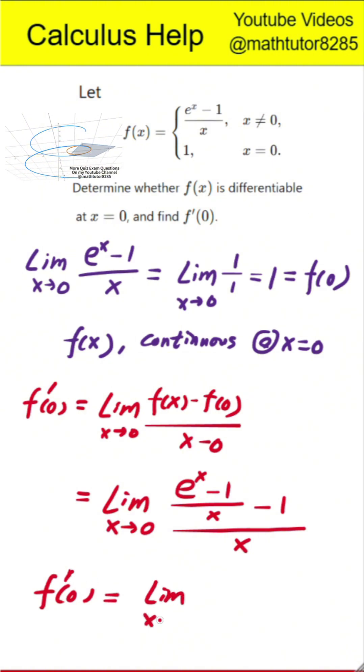So the derivative at 0 equals the limit of e to the x minus 1 minus x all over x squared as x approaches 0.